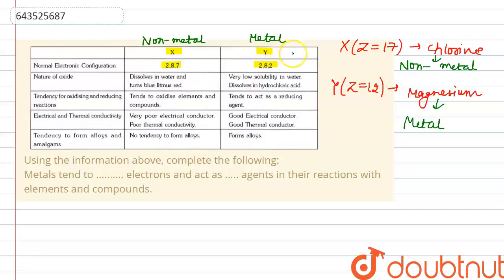metals act as reducing agent. Non-metals are very poor electrical and thermal conductor, whereas metals are good conductor of electricity as well as heat. Tendency to form alloys and amalgam: non-metals do not form any alloys, whereas metals form alloys.